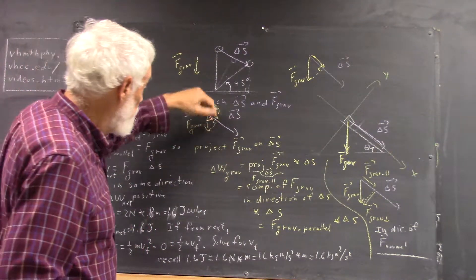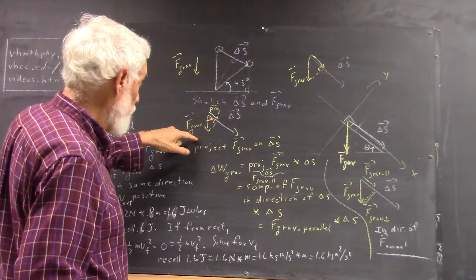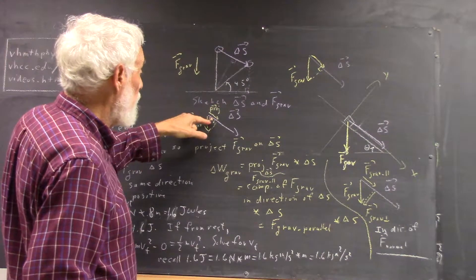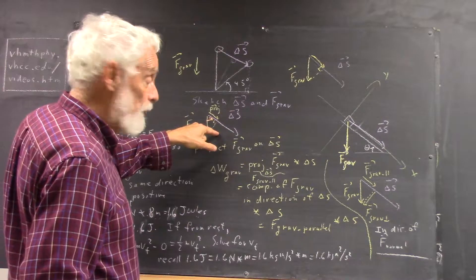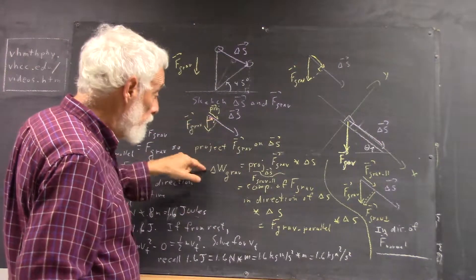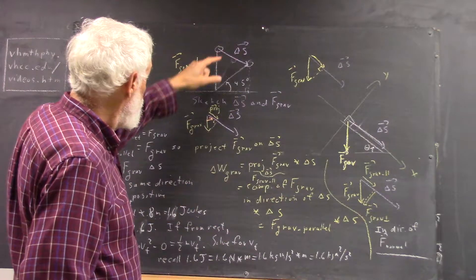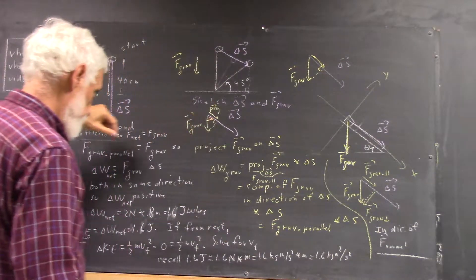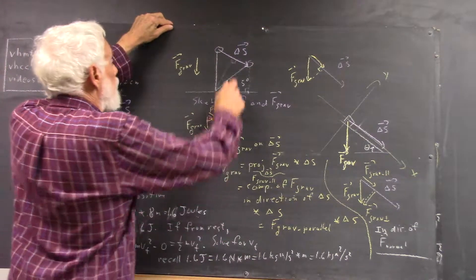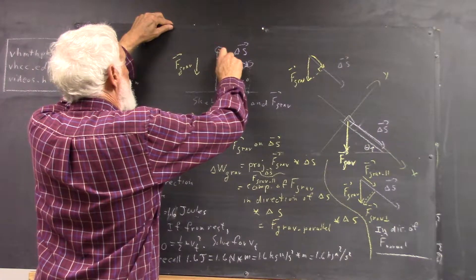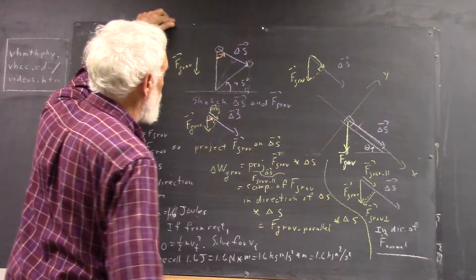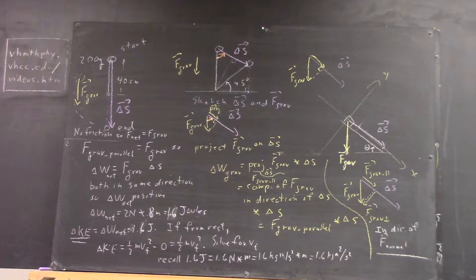If we want the other component of the gravitational force, we can multiply by the sine of this angle. We can calculate this provided we know this angle. So the angle we want is right here. How can we find this angle?